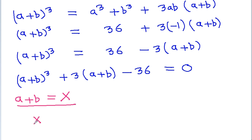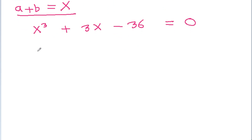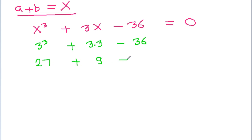And (A+B) whole cube plus 3 times (A+B) minus 36 will be equal to 0. If we take A plus B equal to x, then we will get x cubed plus 3x minus 36 is equal to 0. And if we put x equal to 3, then 3 cubed plus 3 times 3 minus 36 gives 27 plus 9 minus 36, that is 0. That means x minus 3 will be a factor.